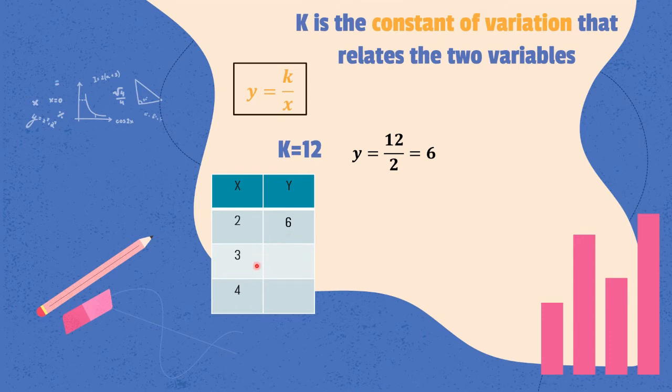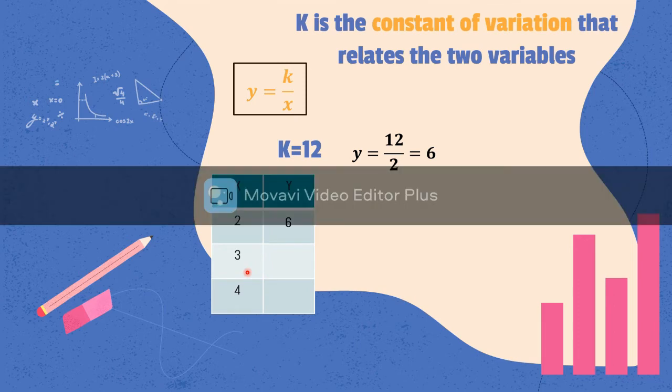Let's have the value of y when x is equal to 3. So, we'll still use k equals 12, divide it by 3. That is equal to 4. So, when x is 3, y is 4.